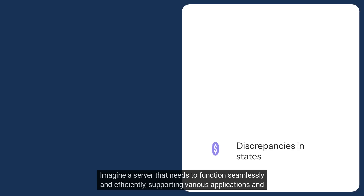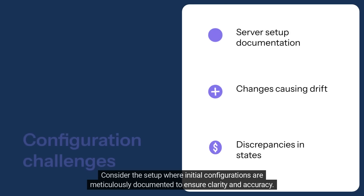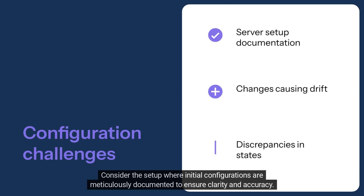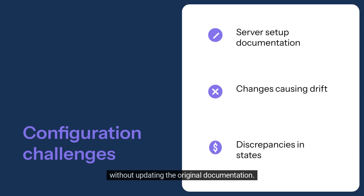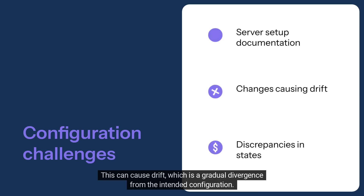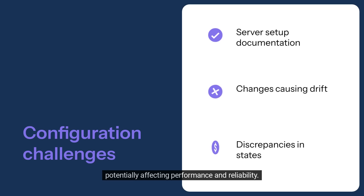Imagine a server that needs to function seamlessly and efficiently, supporting various applications and services. Consider the setup where initial configurations are meticulously documented to ensure clarity and accuracy. Over time, as the server evolves and adapts to new demands, changes might be made directly on the server without updating their original documentation. This can cause drift — a gradual divergence from the intended configuration — leading to discrepancies between the actual state of the server and its documented state, potentially affecting performance and reliability.